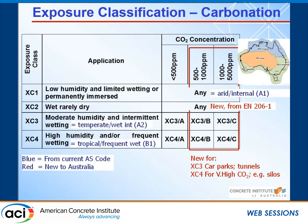Traditionally in Australia we've looked at three different types of exposure conditions. The most common is a temperate condition — most of our population live on the east coast, southern Australia, and the west, represented by the green areas on the screen. The yellow in the middle has always been the arid environment; there's not a lot of construction there but a great deal of mining, so durability requirements are still important. The blue area is the tropical area — Northern Territory and far North Queensland — with a lot of rain and humidity.